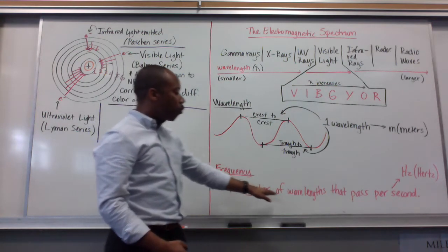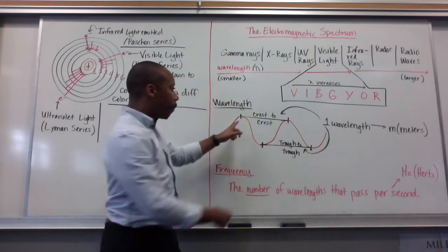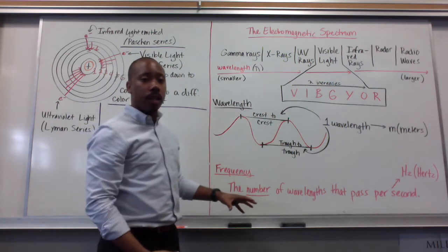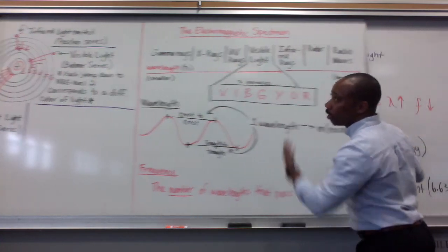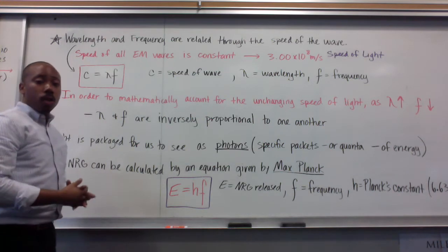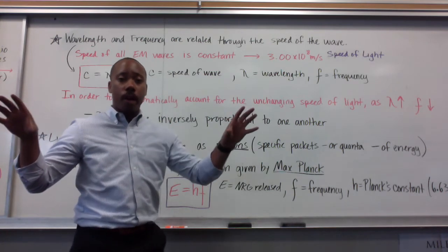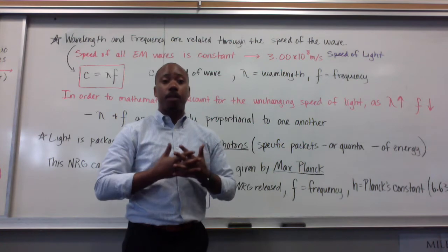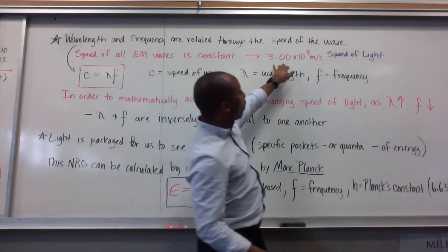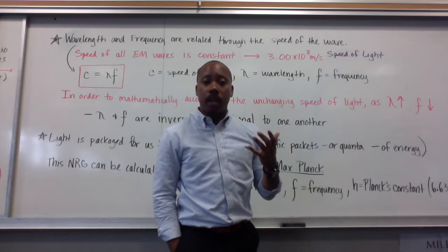This is going to affect our frequency. Our frequency is the number of wavelengths that pass per second, and it's measured in hertz, Hz. So how many of these crest to crest pass a certain point per second? That is the frequency. These are related, wavelength and frequency are related through the speed of the wave. So all those waves I just showed you before, gamma rays all the way through radio waves, they all travel at the same speed. So the speed of all electromagnetic waves is constant. That number is 3.00 or 3 times 10 to the eighth meters per second. This is known as the speed of light.